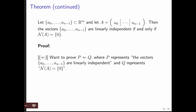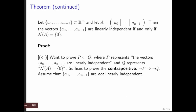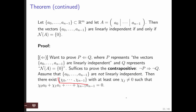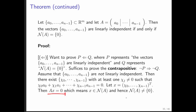Going the other direction via the contrapositive: instead of proving that if the null space only has the zero vector then the columns are linearly independent, we assume the vectors are not linearly independent — that is, linearly dependent. Then there exists a set of coefficients, at least one not equal to zero, such that their linear combination adds up to zero. If we let x be that column vector of coefficients, then Ax = 0, meaning x is in the null space, so there is a non-zero vector in the null space.